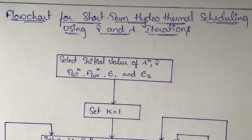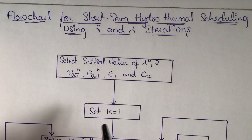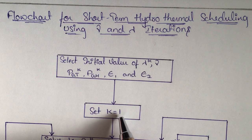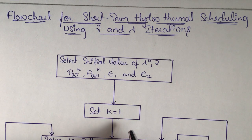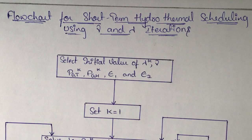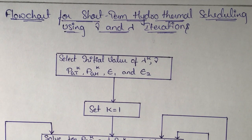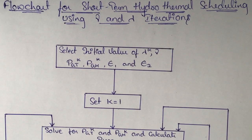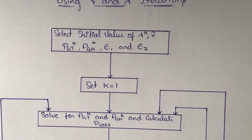Our next step is to define the value of k. From algorithm step 3, k is set equal to 1. k varies from 1 to capital N. So our first step sets k equal to 1.